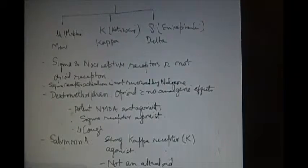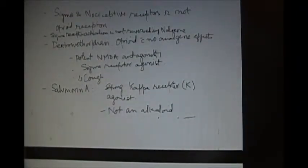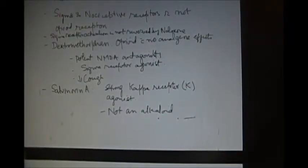The sigma and nociceptive receptors are not opioid receptors. The sigma receptor is not reversed by naloxone. Naloxone and nalorphine are opioid antagonists. What they do is that they are competitive inhibitors of the opioids. They displace them from the opioid receptors and then occupy the opioid receptors, but they do not stimulate them. And this is how they stop or reverse the action of opioids.